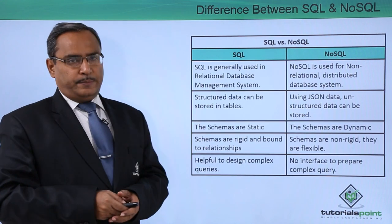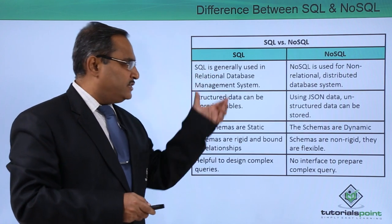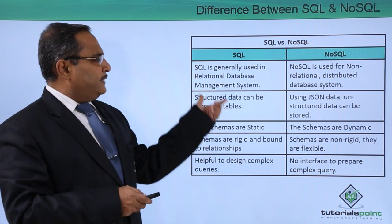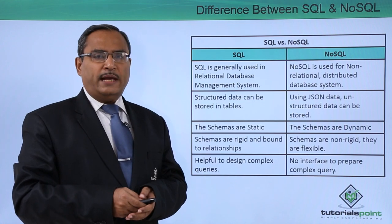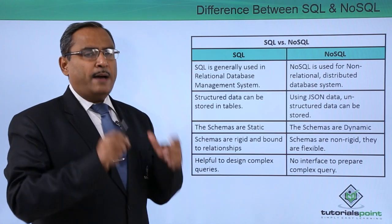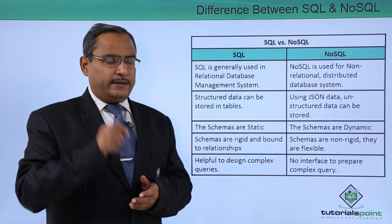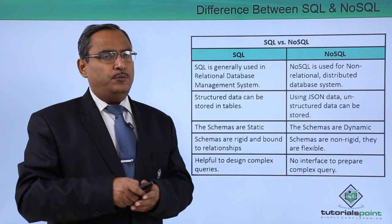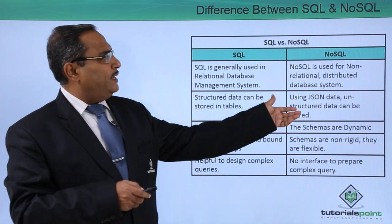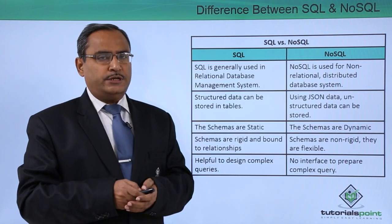We have a comparison table for SQL versus NoSQL. SQL is generally used for RDBMS, that is a Relational Database Management System. In a relational database management system, the database has multiple tables with a fixed, static structure. Tables have multiple rows and columns — each row is known as a record or tuple, and columns denote the fields or attributes. NoSQL, on the other hand, is used for non-relational and distributed database systems.